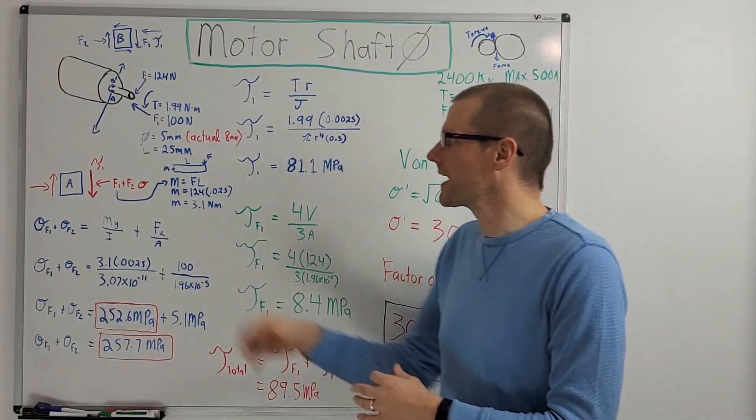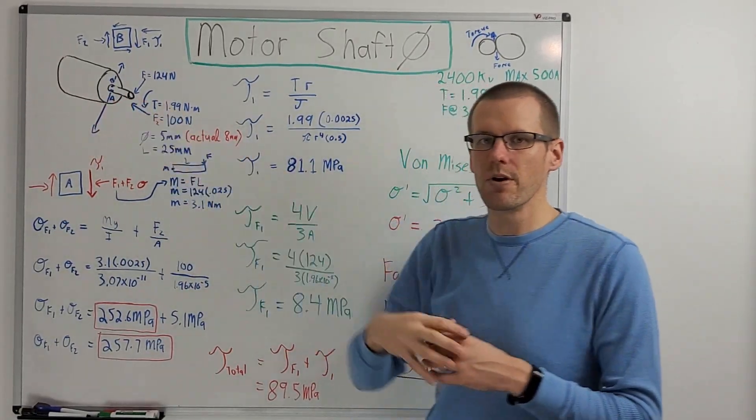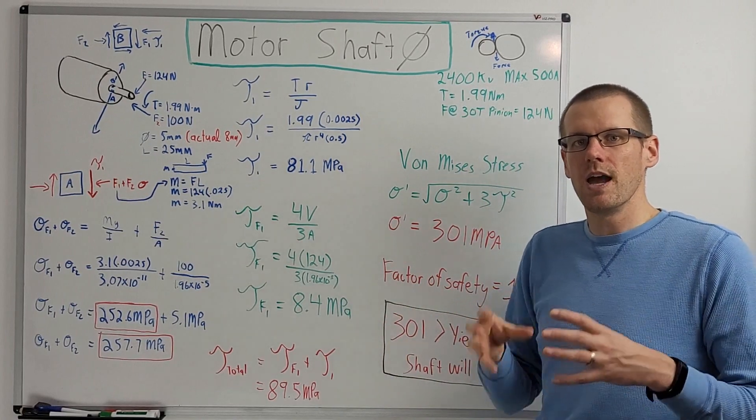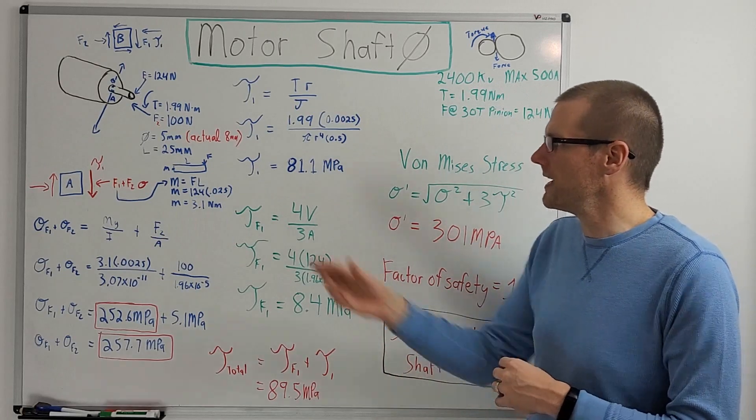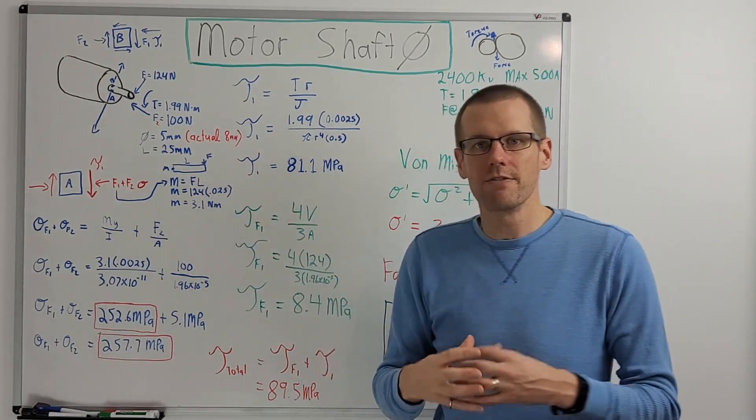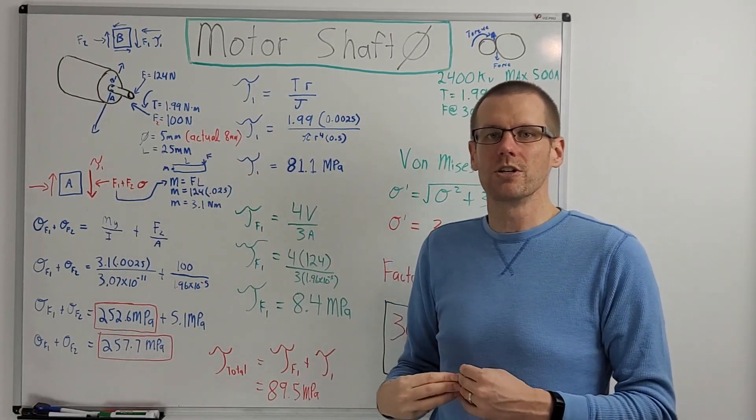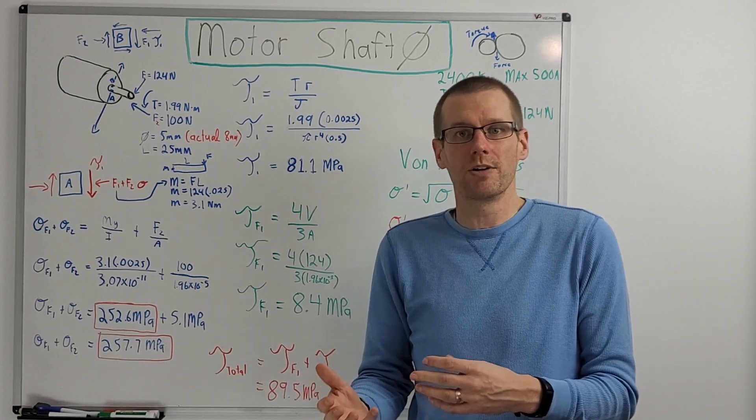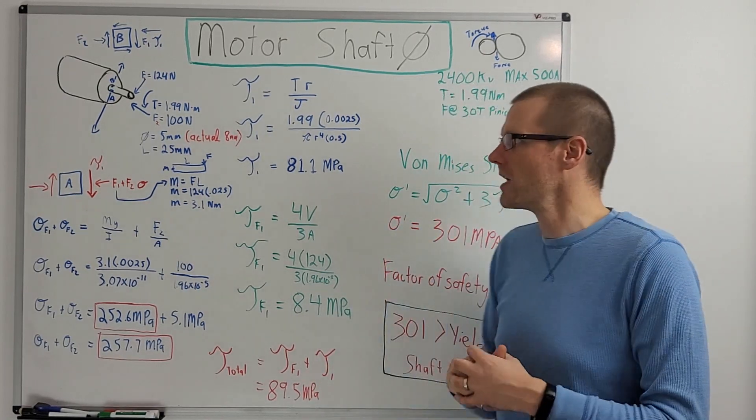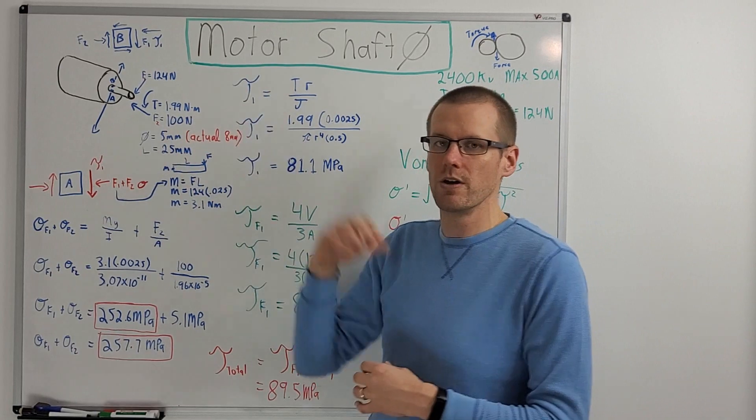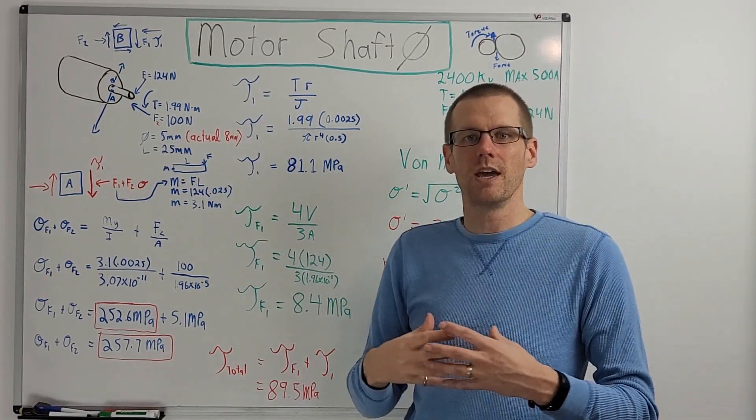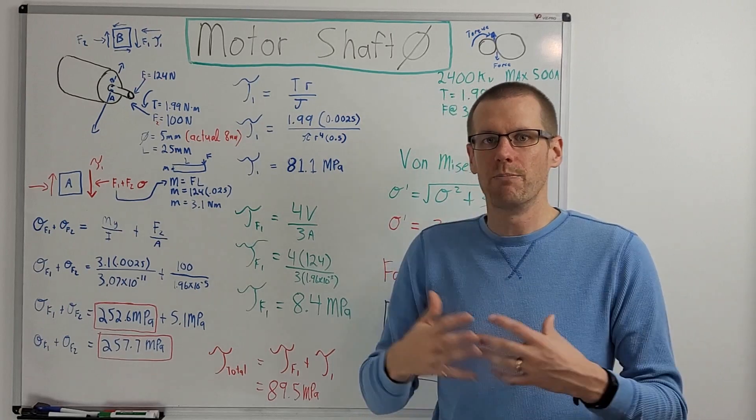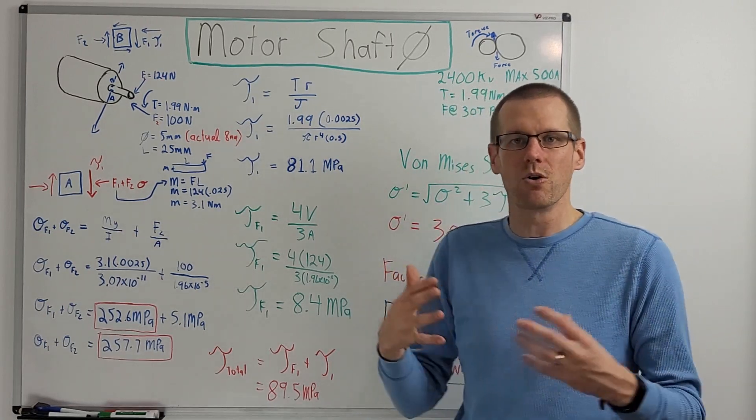The scenario that we're going to be taking a look at here today is of a brushless motor. We're going to assume a mock-up of the Castle 1721 2400 KV. The actual size of the motor shaft is eight millimeters. And the big question is, what happened if that was not eight millimeters and it was five millimeters?